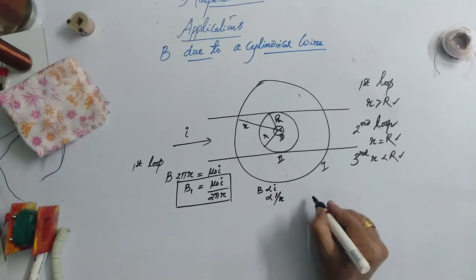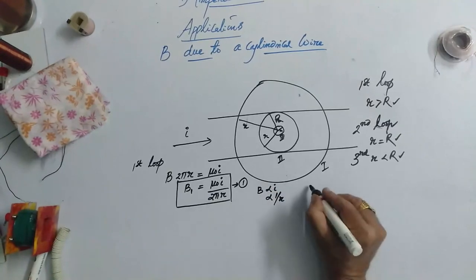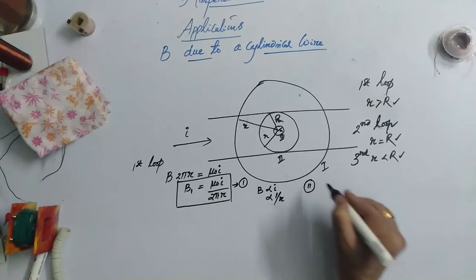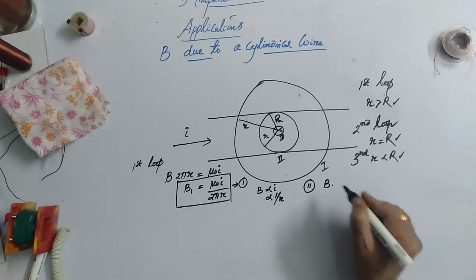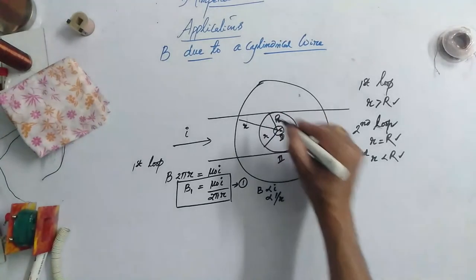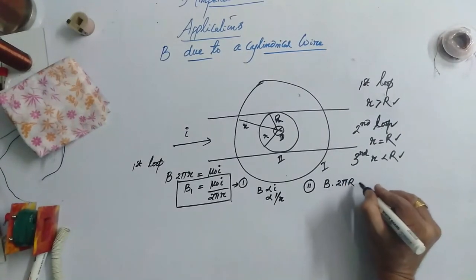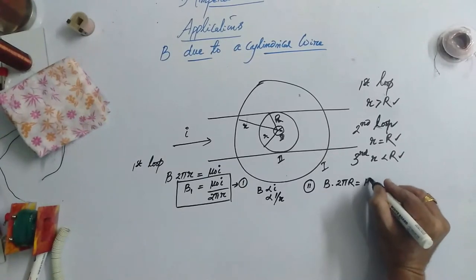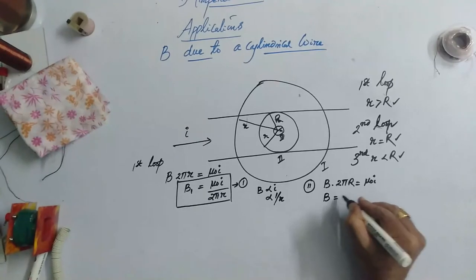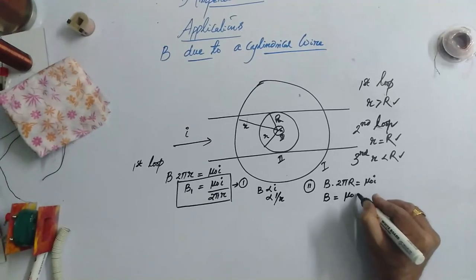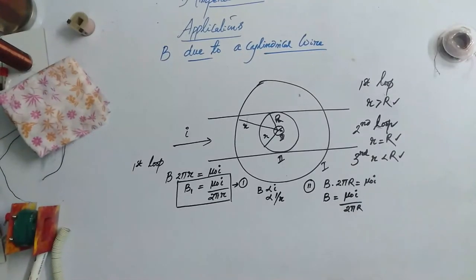Now for second loop, again I should take the Amperian Loop, but this time the radius of the Amperian Loop is capital R. So I can write directly B times 2 pi R which is equal to mu 0 times of I. Now B is equal to mu 0 I by 2 pi capital R.